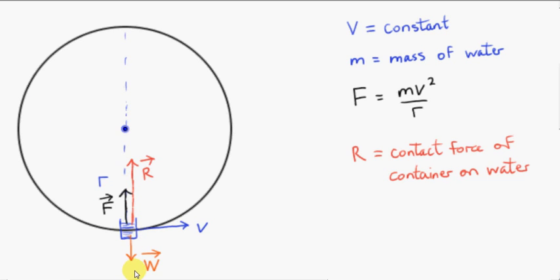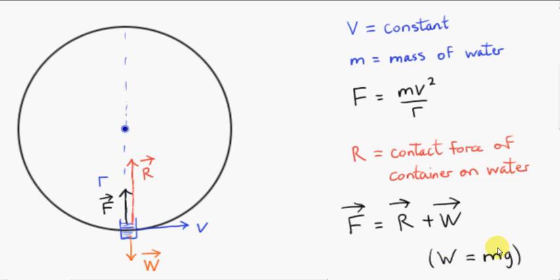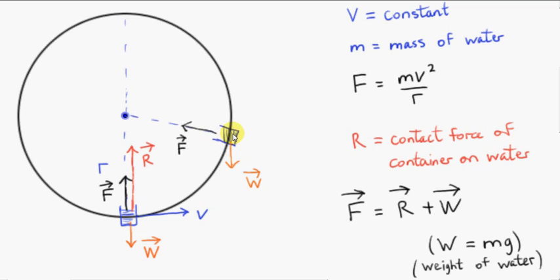W is vertically down. So vector F equals vector R plus vector W. Of course W is mg. We are not including the container in this problem — we're only looking at the weight of the water in the container. When we look at the container in this position, the weight vector never changes; it's vertically down, its magnitude is always mg, where m is the mass of the water.